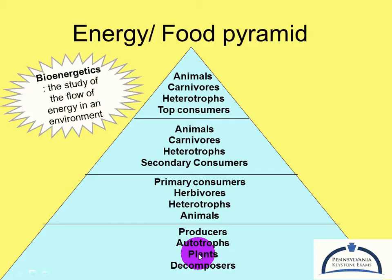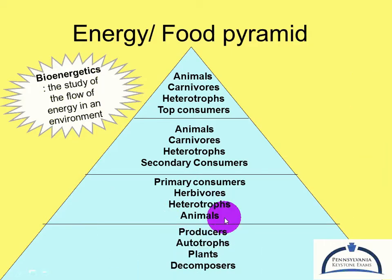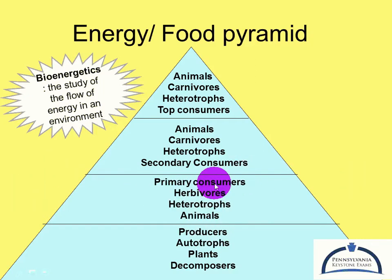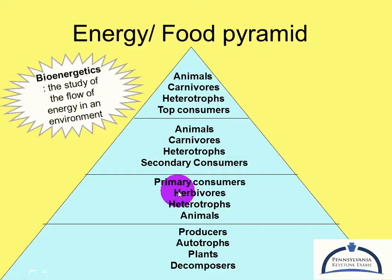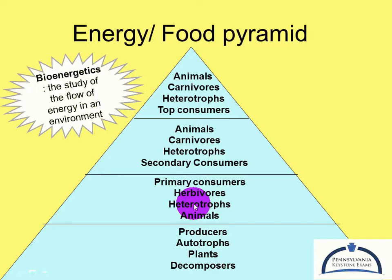Going up one higher step, you have your primary consumers. They're not producing food, they're consuming it — they're the first organisms to actually consume it, so we call them primary. These are typically your herbivores because they are eating the plant matter of the producers. We can also refer to them as heterotrophs because they don't make their own food; they have to eat food.